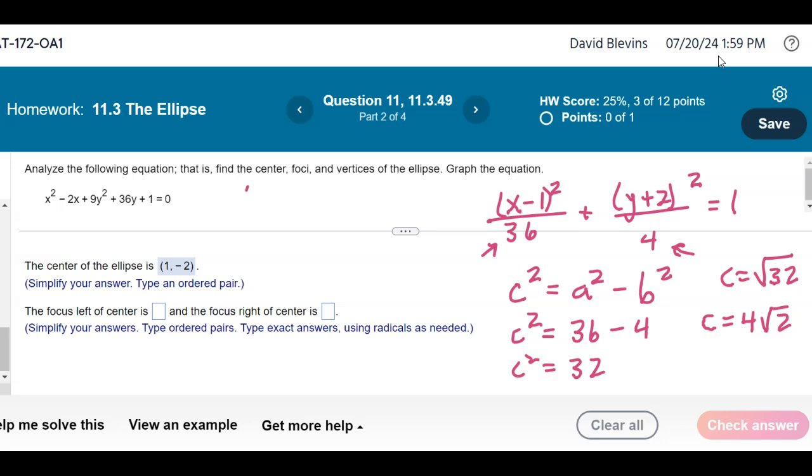That's what I need to add and subtract from the center to get each focus. Our center was 1, negative 2. I add to that, that's the bigger denominator, so I'm adding it to x. To get the left one, I'm going to subtract 1 minus 4 square root of 2. The y coordinate's not changing because we're just subtracting it from x. My right one is going to be adding that number, 1 plus 4 square root of 2.